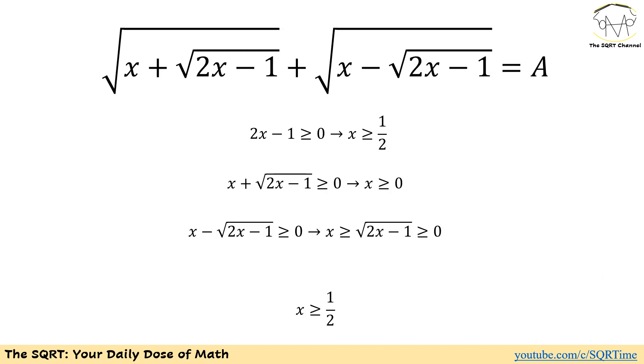To solve this problem, let's start by reviewing what values we can have for x. We have three different radicals here. Let's start with what we have for 2x minus 1. 2x minus 1 needs to be greater than or equal to 0, and as a result, x is going to be greater than or equal to 1 over 2.